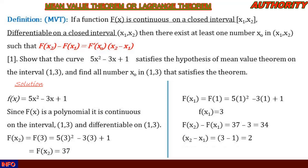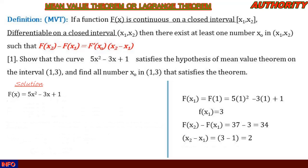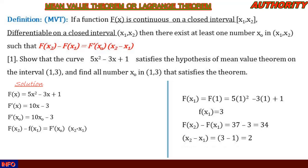Now let's find f prime of x0. Our function is f(x) = 5x² − 3x + 1. Differentiating, we get f prime of x = 10x − 3. So f prime of x0 = 10x0 − 3. Our theorem states: f(x2) − f(x1) = f prime(x0) · (x2 − x1), which gives us 34 = (10x0 − 3) · 2, and x2 − x1 = 2.